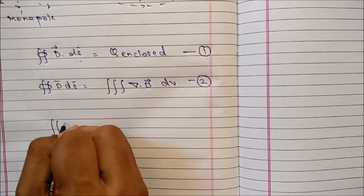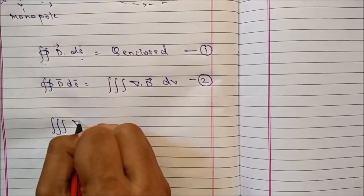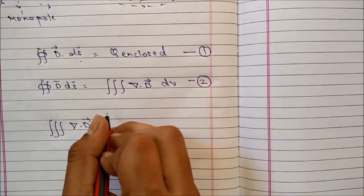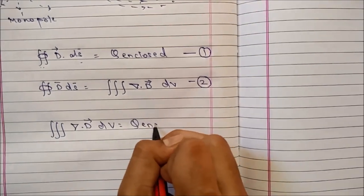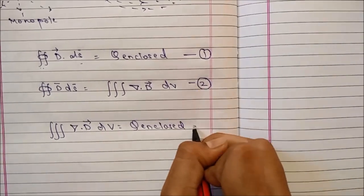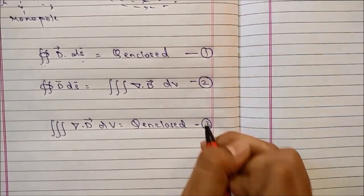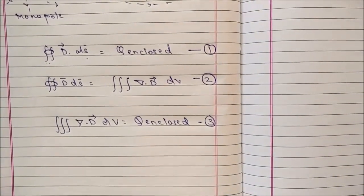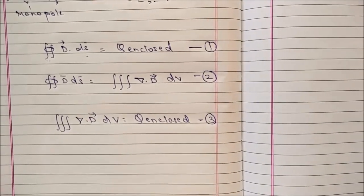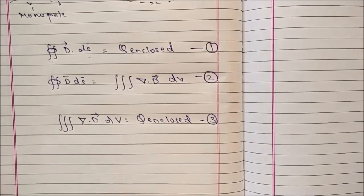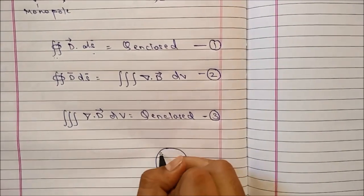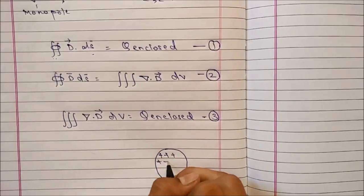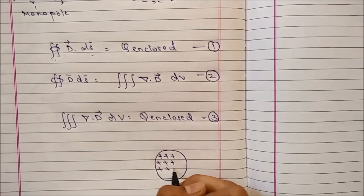Now we replace equation two in equation one, so we get equation number three. Now we know that a body, a charge, consider this as a sphere having charges distributed over its volume.